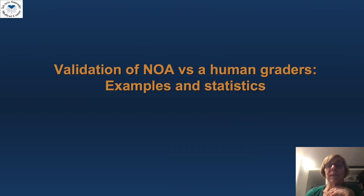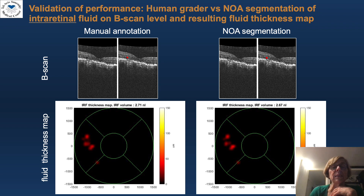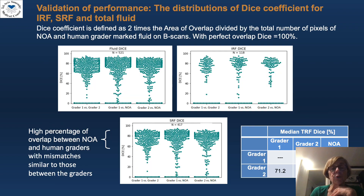Let me show you some examples and statistics. Here you can see a human grader versus a NOAA segmentation of the intra-retinal fluid on the BISCAN level and on the fluid thickness map — you can see that they are pretty similar. Likewise, for sub-retinal fluid, manual annotation both on the BISCAN and on the fluid thickness map is very similar to the NOAA segmentation.